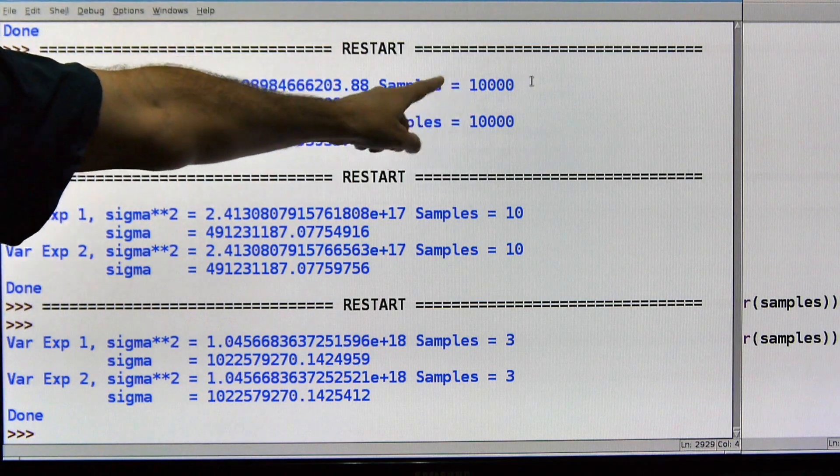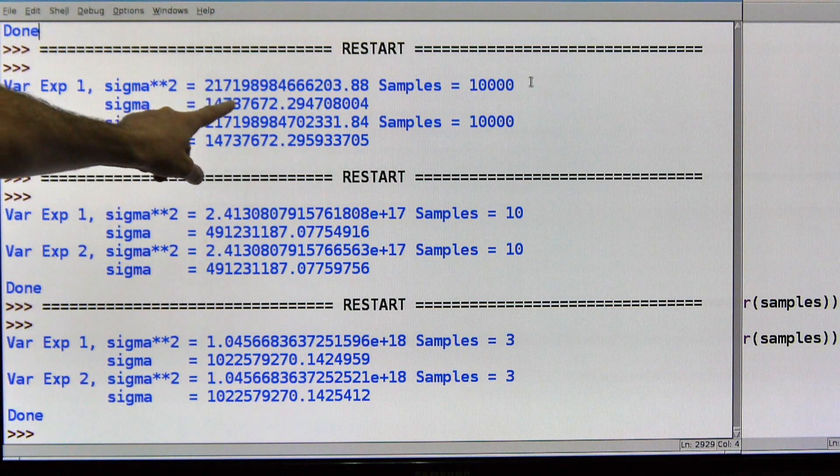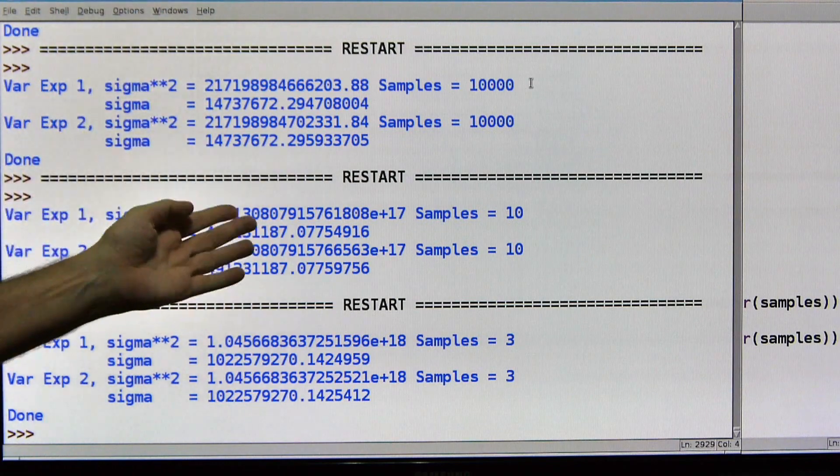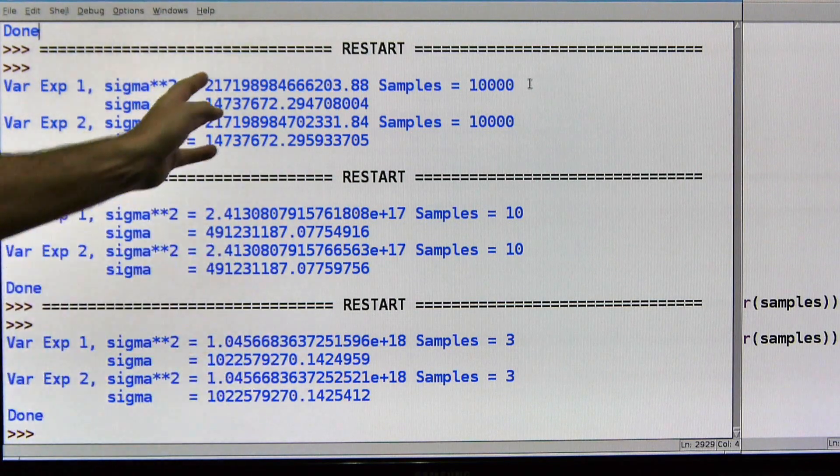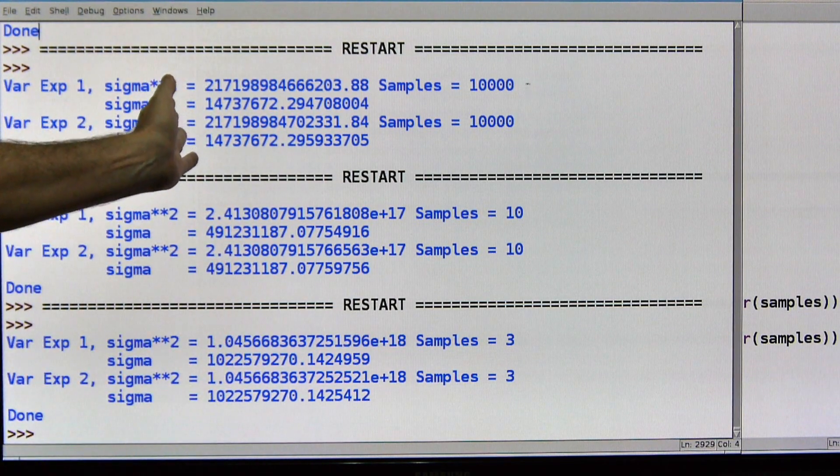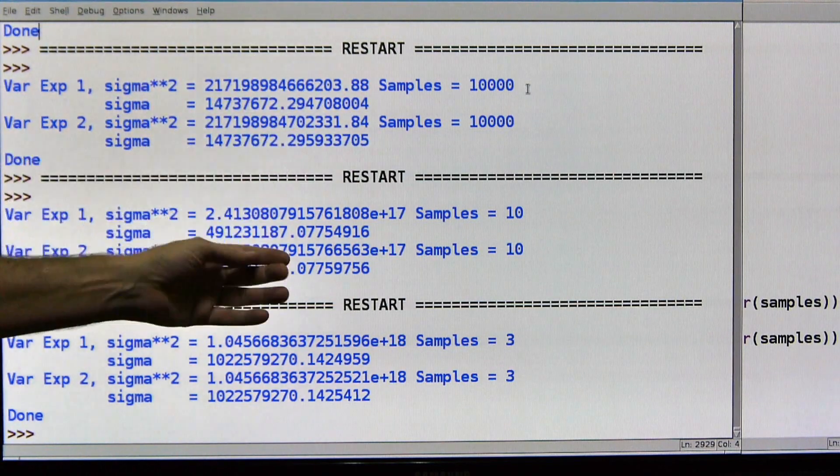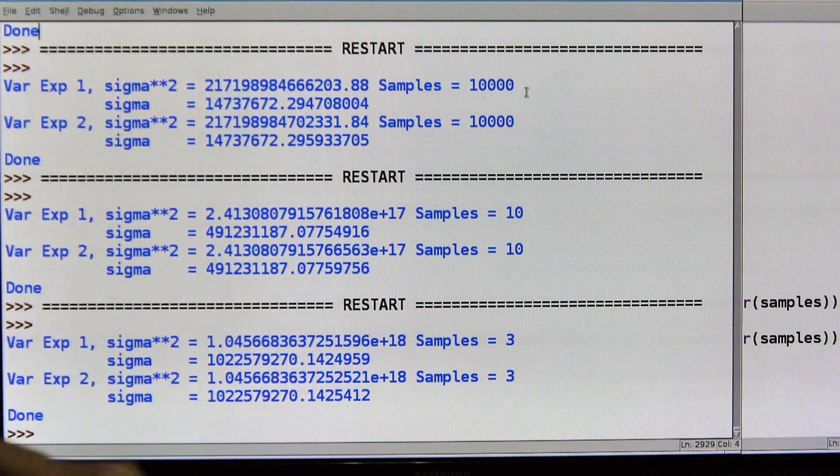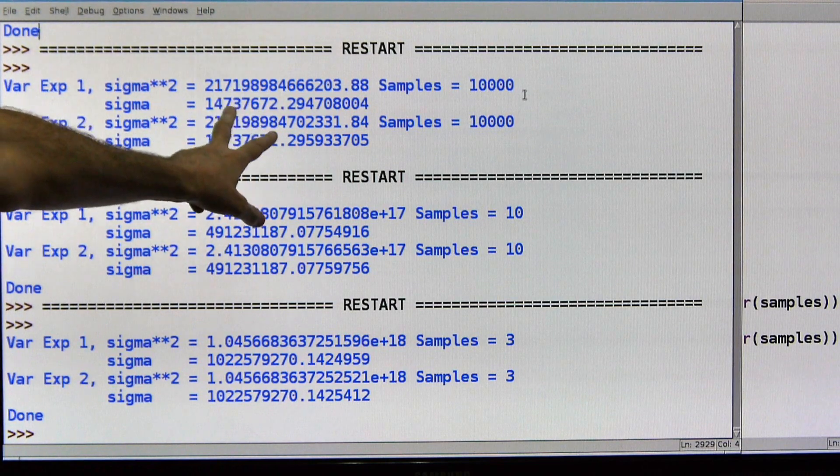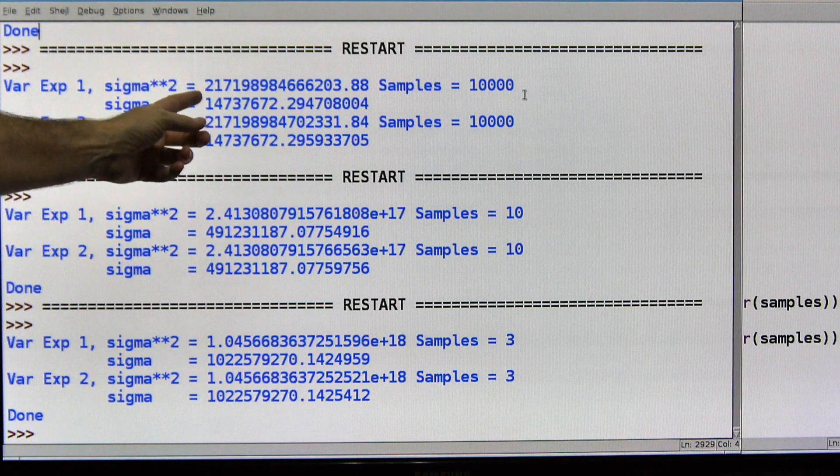So the first one, I have 10,000 samples on experiment one and experiment two. My sigma squared is huge. I mean, this thing is huge. Now if all of your results are very close, then your sigma squared will be very close to zero. So if the answer were terribly consistent, like it was always 1, 1, 1, 1, 1, well, sigma squared of 1, 1, 1, 1, 1 is zero. Clearly our results are very spread out. And then the sigma down here is the square root, of course, of that. So experiment one, where we just turned pin seven on and off, well, we've got a huge variance.